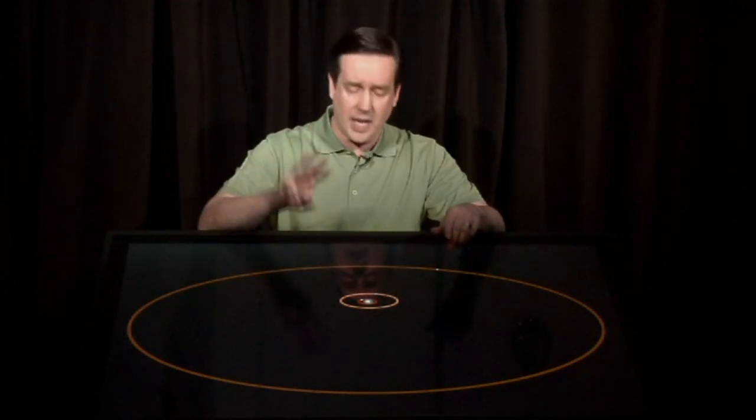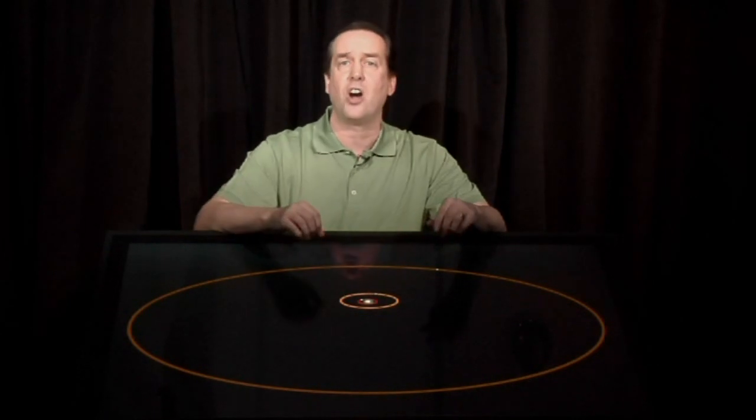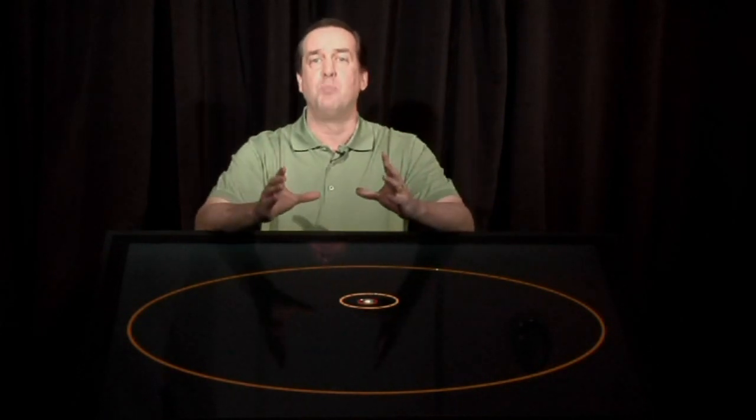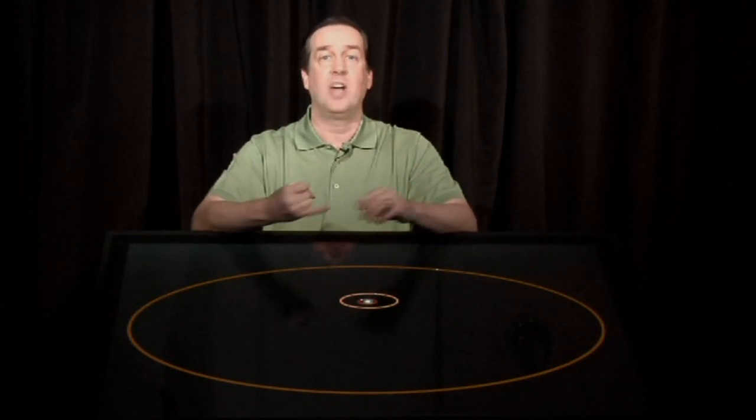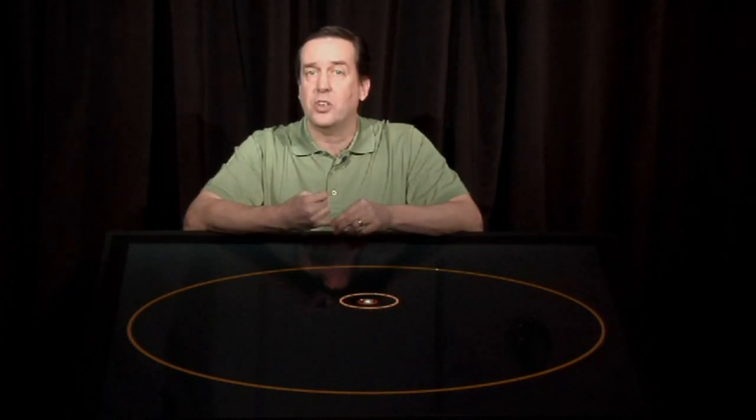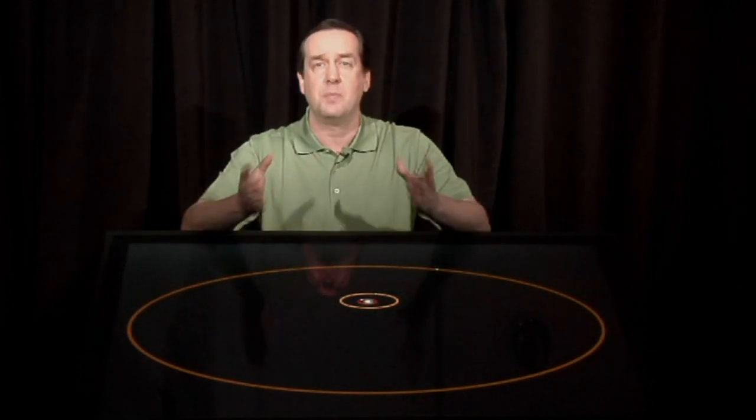And then there are three more planets way down in here next to the star that all have orbits smaller than Mercury's orbits. These planets range from Neptune-sized planets all the way up to one planet that is four times the mass of Jupiter.